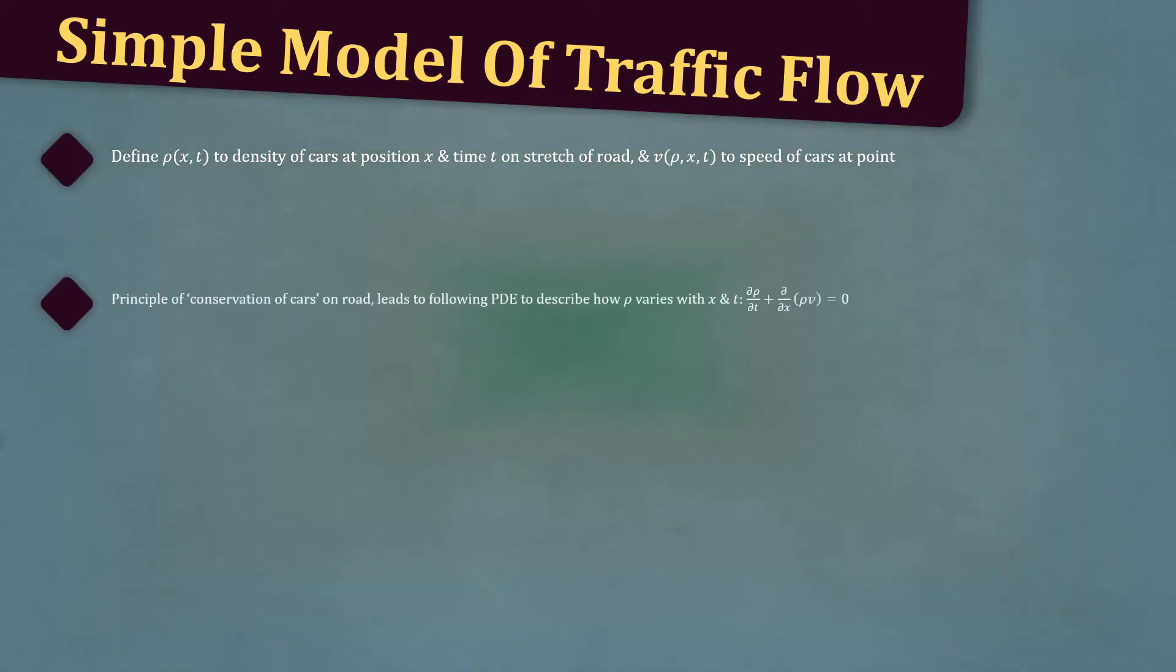The principle of conservation of cars on the road leads us to the following PDE to describe how ρ varies with x and t: ∂ρ/∂t + ∂(ρv)/∂x = 0.